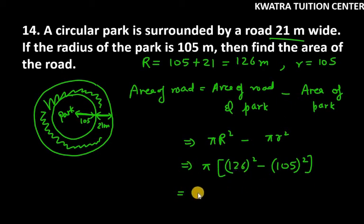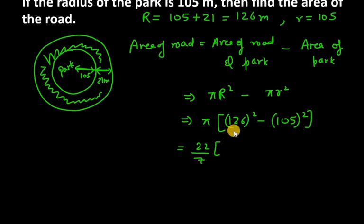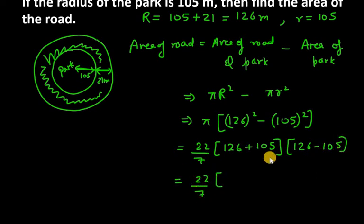You can use an identity here to solve this equation so we can get the answer quickly. You can clearly see we have a square minus b square. And a square minus b square can be written as a plus b times a minus b. So this is 22 over 7, then 126 plus 105 is 231, then we have 126 minus 105 which is 21.